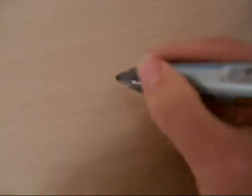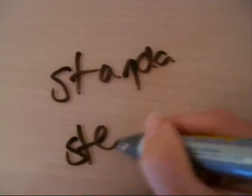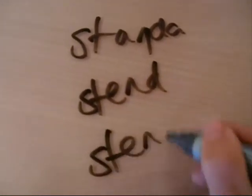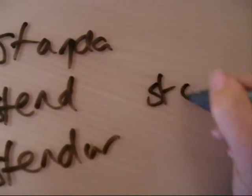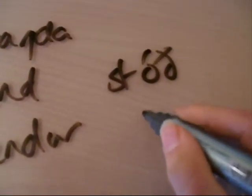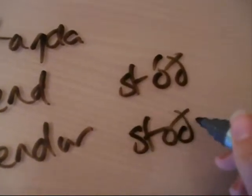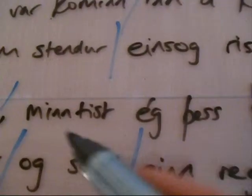Stóð means 'stood,' and it comes from the strong verb 'standa.' Remember the paradigm: ég stend, þú stendr. The past tense is ég stóð, like 'I stood,' and þú stóðst. So here we're using stóð — 'I stood,' meaning 'I remember when I was a little boy and stood.'